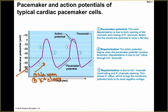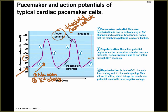Number two is depolarization. You're going to get this action potential to happen whenever you reach threshold. This is due to both the opening of sodium channels and the closing of potassium channels. The potential reaches threshold because calcium is coming in — threshold is right here at negative 40 millivolts.